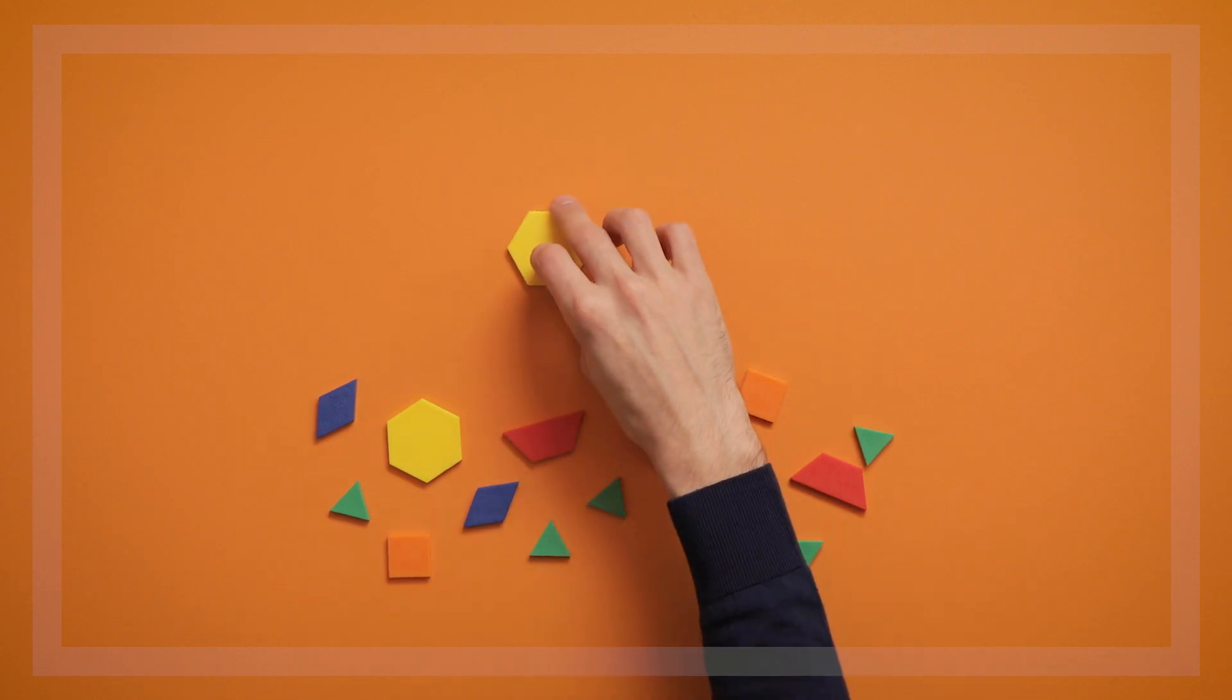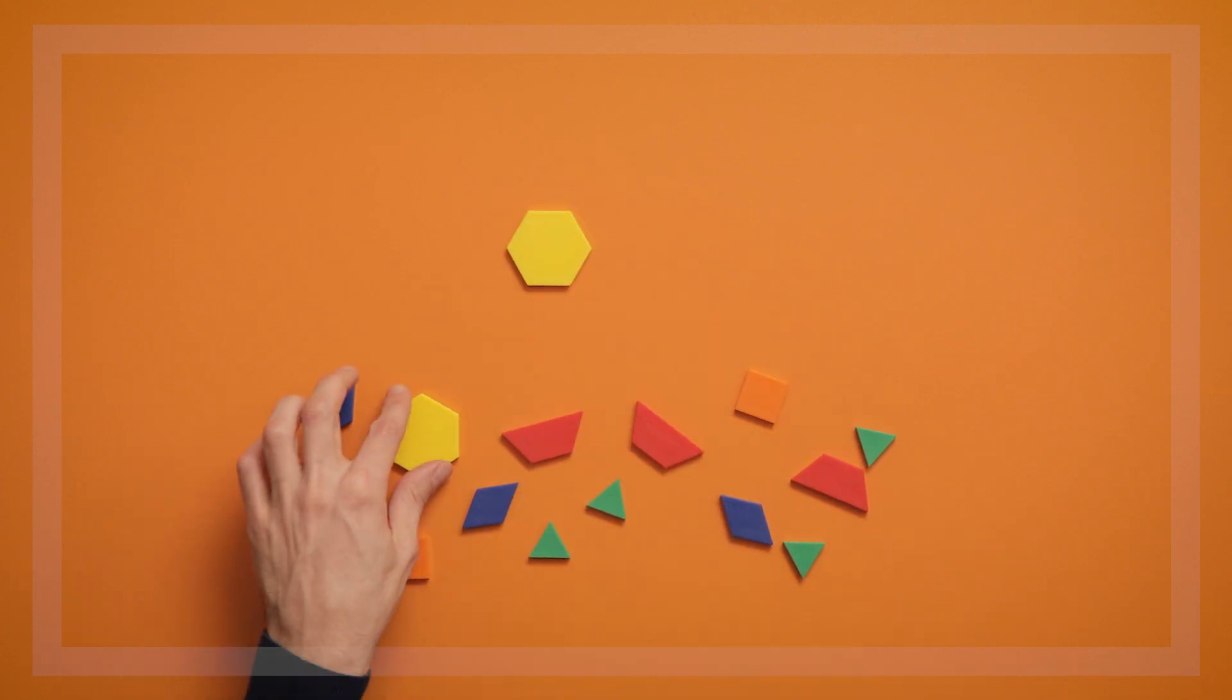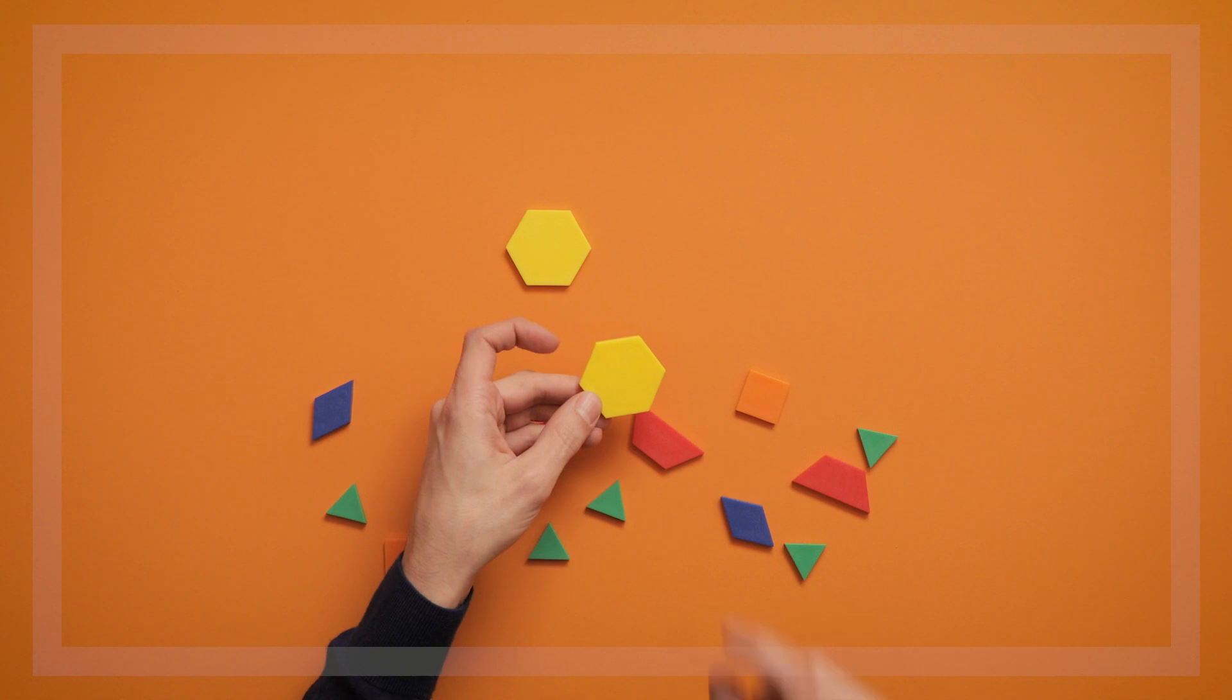This is a great way to help children pay attention to the characteristics of a shape, like how many sides and vertices it has.